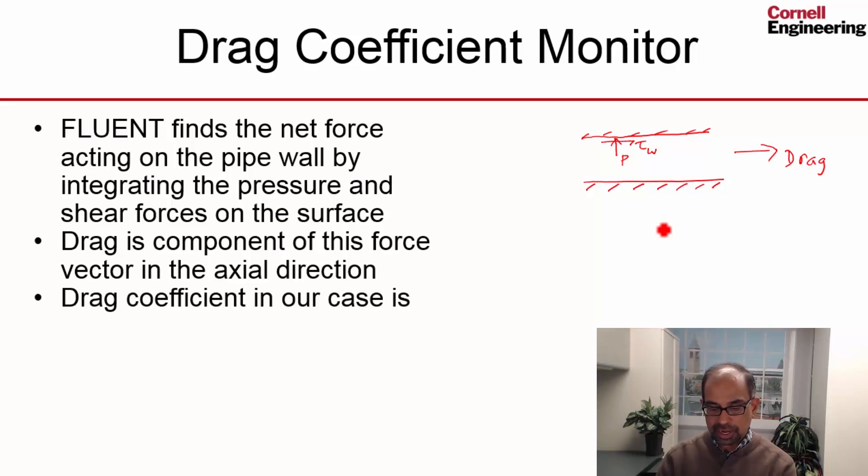Drag coefficient is defined as follows. So you take the drag and you non-dimensionalize it. And it's a good idea to look at non-dimensional quantities rather than dimensional quantities. So you take the drag and you non-dimensionalize it by the dynamic pressure. So that's this entity. And you use the average velocity at any cross-section as the reference velocity. And then, so that's the dynamic pressure. It has the units of pressure. And you need to multiply it by an area to get units of force. And the appropriate area to use is what is called the wetted area, which is the area of the pipe in contact with the flow.